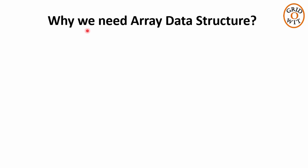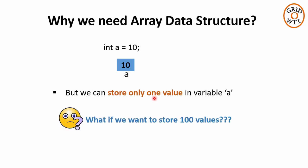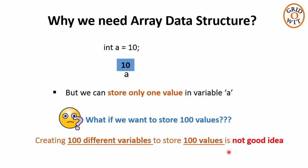So let us focus on why we need array data structure. Consider an integer primitive data type, for example int a equals 10. Due to this statement, a variable named a will be created in memory with the size of an integer and 10 will be stored in it. But the problem here is we can store only one value. What if I am having 100 values, and all the values are related to each other in some context? Creating 100 different variables to store these 100 values is not a good option.